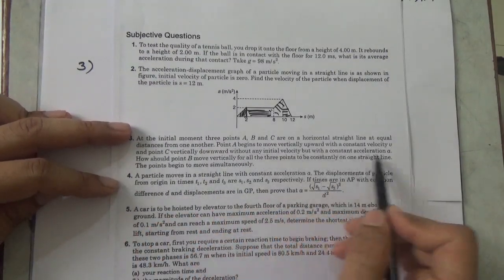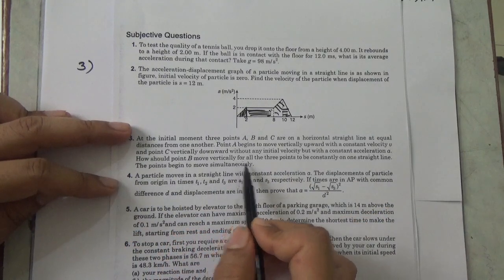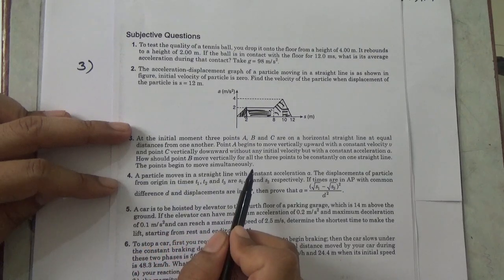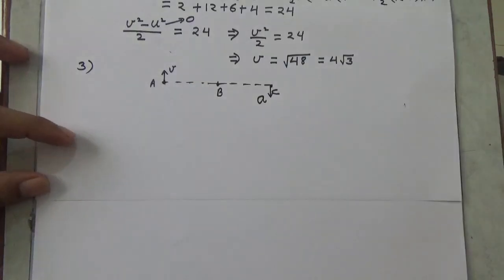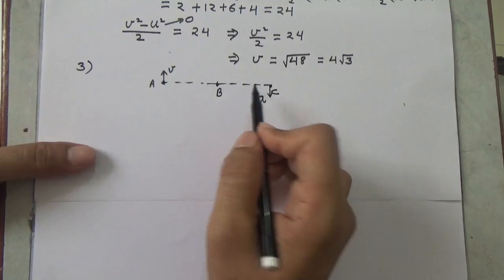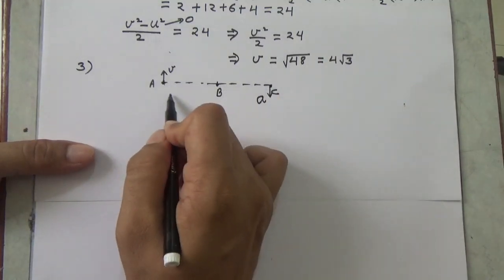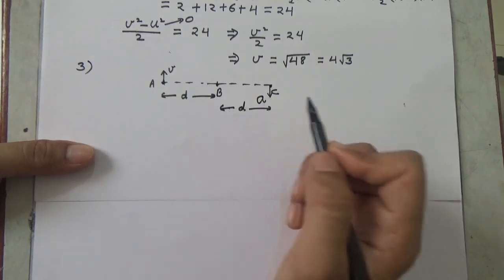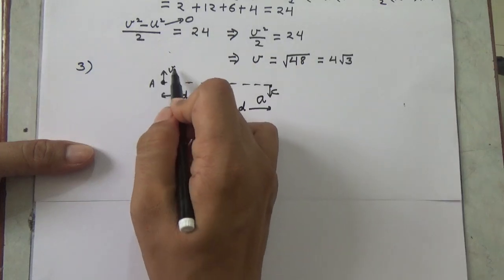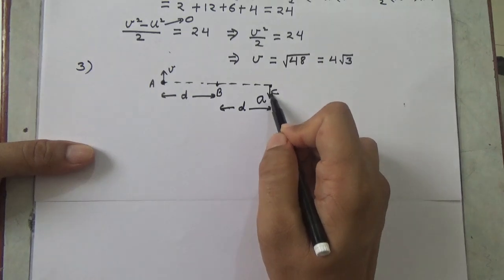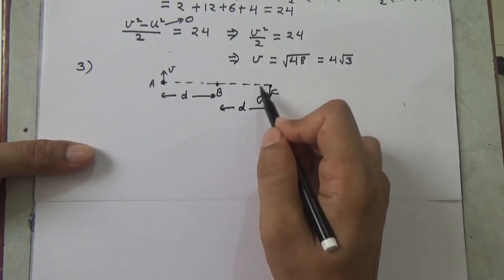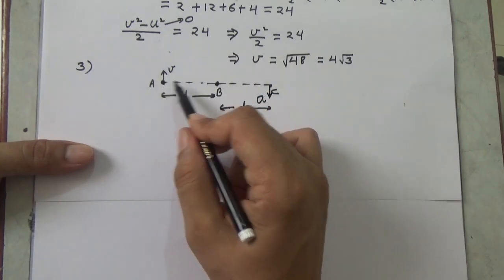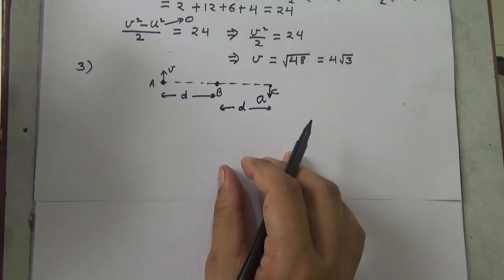How should point B move vertically for all three points to be constantly on a straight line? The points begin to move simultaneously. So we have three points on a horizontal line which are equidistant — if we take this distance as d, then this distance will also be d. Point A starts moving vertically upward with constant velocity v, while point C starts moving vertically downward with constant acceleration and no initial velocity.